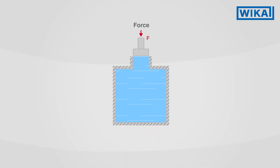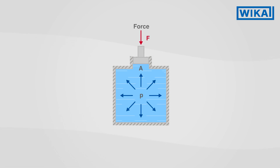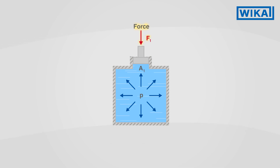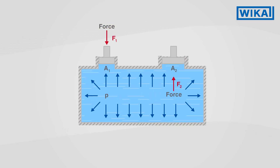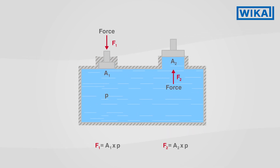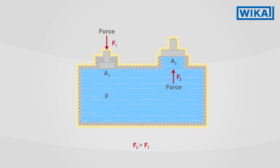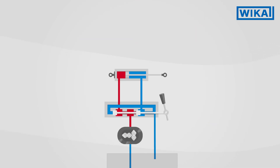This is where Pascal's law takes effect. If a force F is applied over an area A to a liquid in a closed container, the same pressure P is generated everywhere and in all directions of the liquid. This can be used to leverage the transmission of force. As the pressure is uniform at any point, the force applied once can be used on a larger effective area. Hydraulic systems work according to this principle.